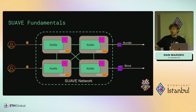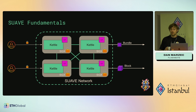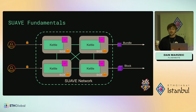Suave is basically a network of these SGX nodes. SGX is also a subset of something called trusted execution environments, or TEEs. We call a node a kettle — it's a tea kettle, it's a little joke. The nodes on the network are called kettles and they run on this trusted hardware.